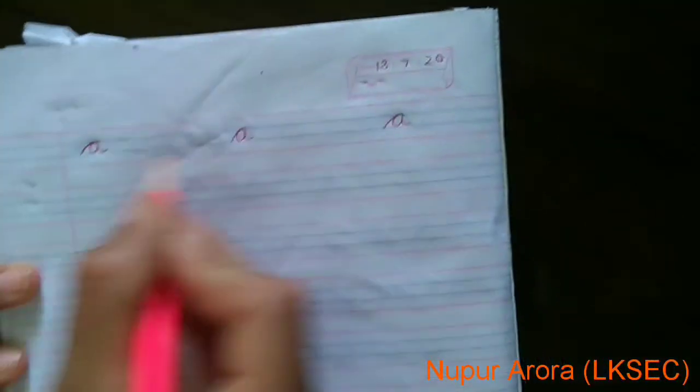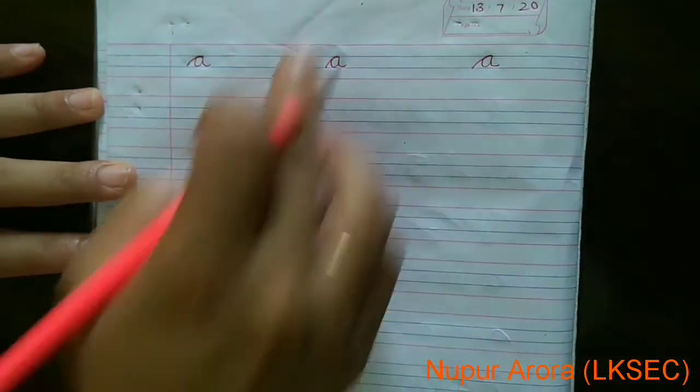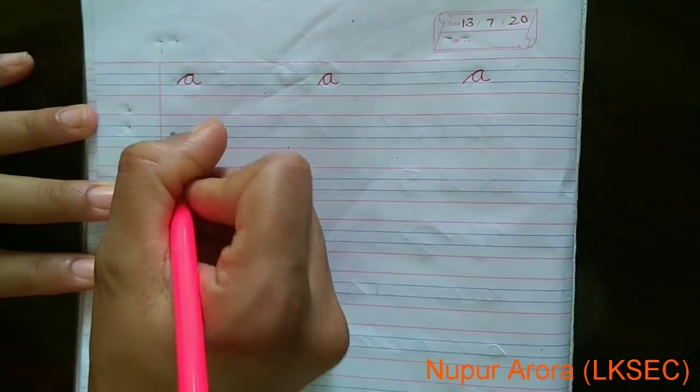Now I will show you in notebook also. See. You have to write three A's. And three A's, you have to make lines like this. Like this, these two lines.